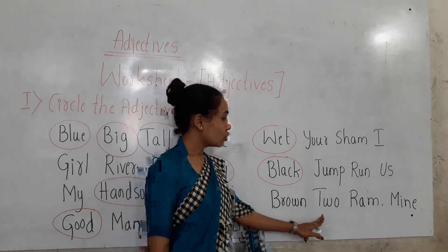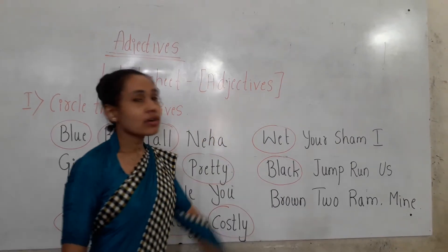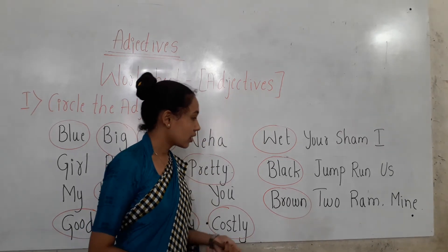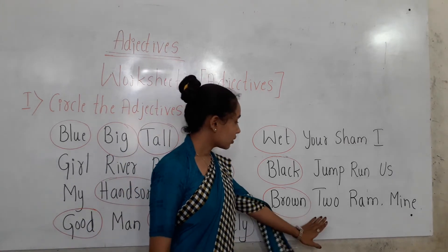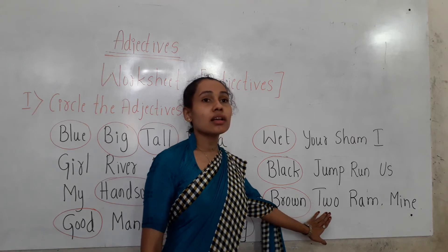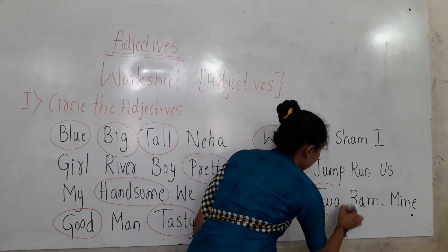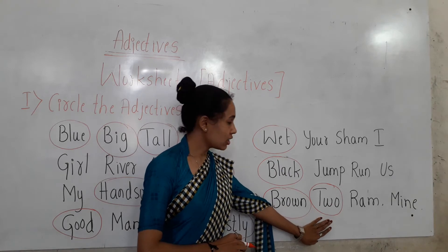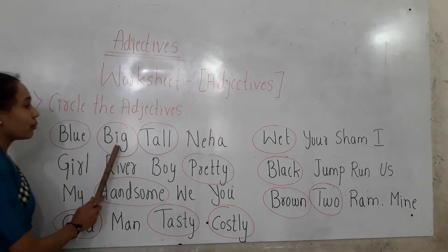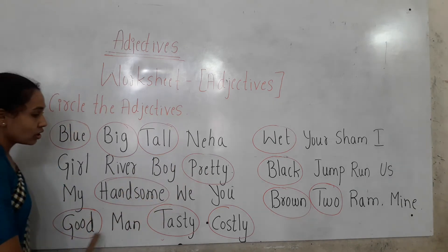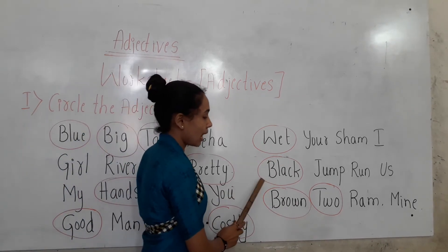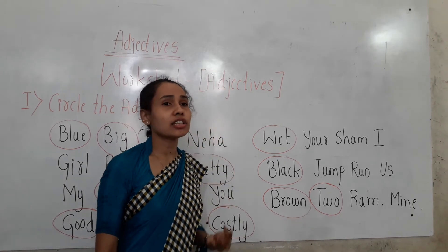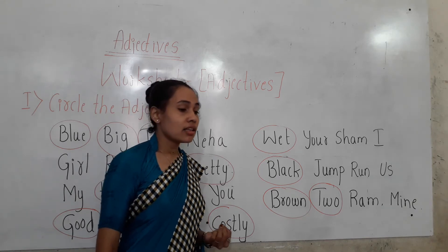Then we have brown, two, Ram, and mine. Brown is an adjective denoting the color of things. Two is also an adjective of number — it describes the number of a noun. So blue, big, tall, pretty, handsome, good, tasty, costly, wet, black, brown, and two are all adjectives. They describe the quality, color, shape, size, and number of nouns.